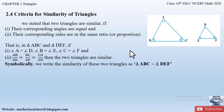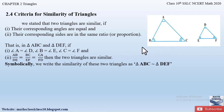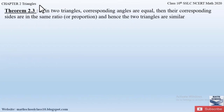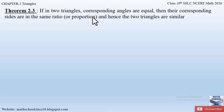Now let us learn the theorem which says that if the corresponding angles are equal, the corresponding sides will also be in proportion, to prove two triangles are similar. Theorem 2.3 from Chapter 2 states: if in two triangles the corresponding angles are equal, then the corresponding sides are in the same ratio or proportion, and hence the two triangles are similar.